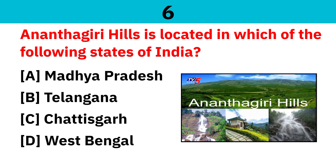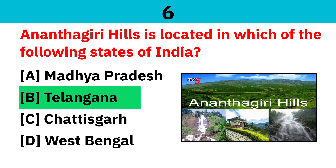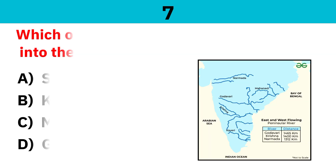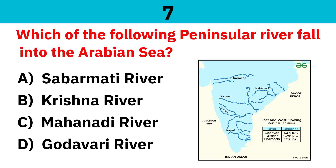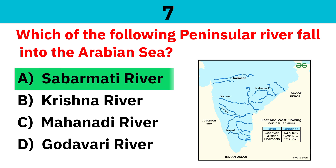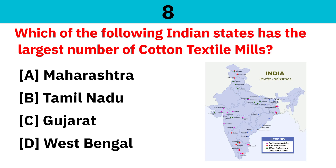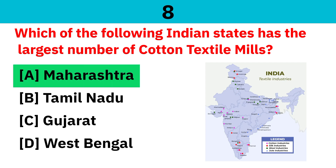Anandhagiri Hills is located in which of the following states of India? Correct answer is Telangana. Which of the following peninsular rivers falls into the Arabian Sea? Correct answer is Sabarmati River. Which of the following Indian states has the largest number of cotton textile mills? Correct answer is Maharashtra.